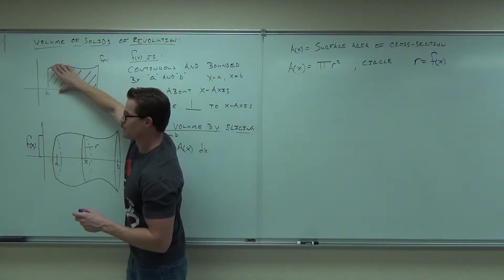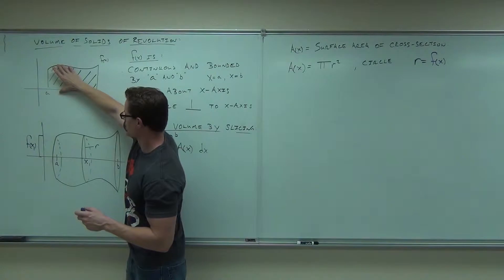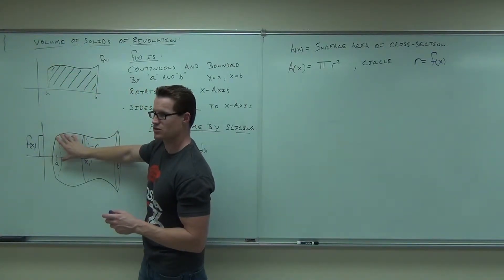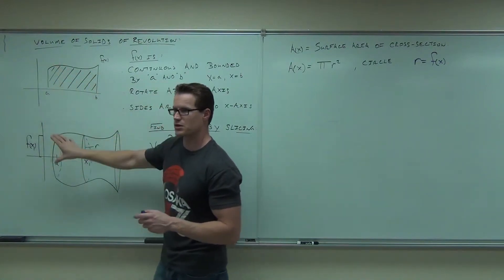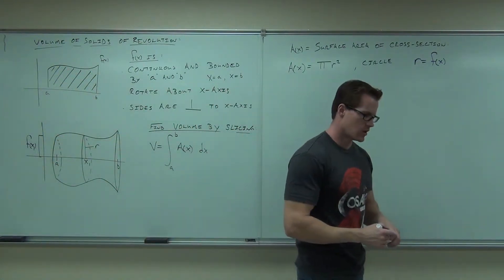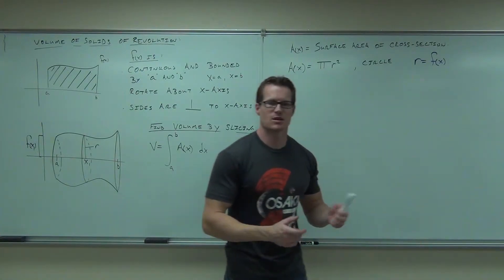So what I'm trying to get at is, just look at the board here real quick. The height here, which is the function's height, is the same as the height here, which is the radius. Is that true? Therefore, the function equals the radius. That's another way to look at it. So radius equals the function. Well, that's kind of cool. That lets us make a substitution.